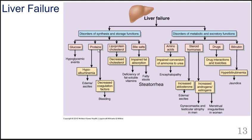Protein production is also affected when the liver fails, and the big protein is albumin. If albumin is not produced and is in lower quantities than normal in the blood, it's called hypoalbuminemia. When we have less protein in the blood, albumin acts to keep fluid within our vessels, so fluid leaves, leading to states of edema, especially seen in the lower extremities, and ascites in the abdomen.